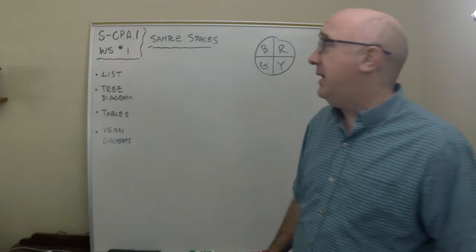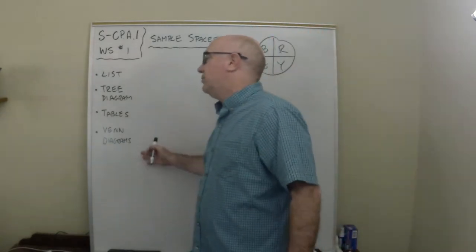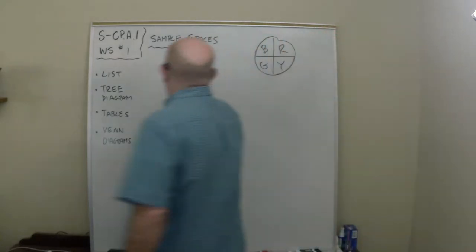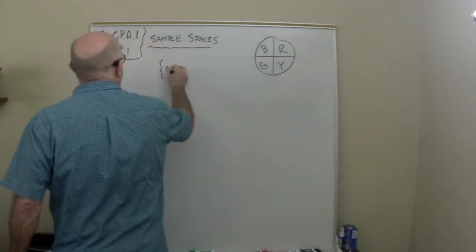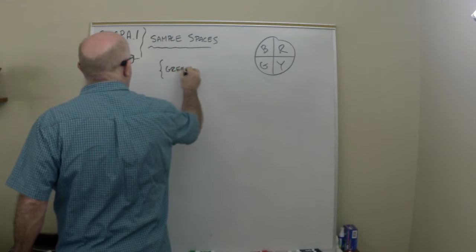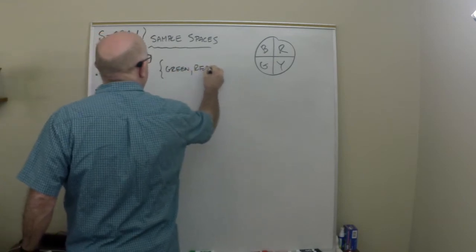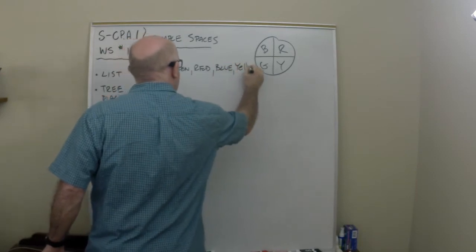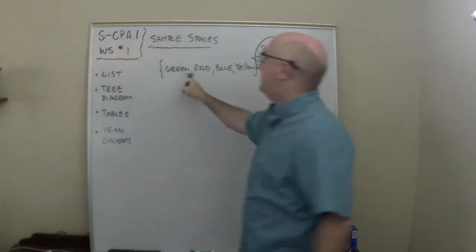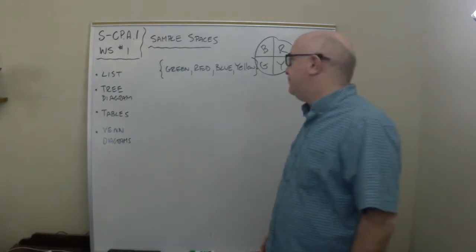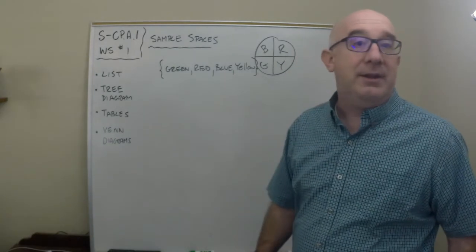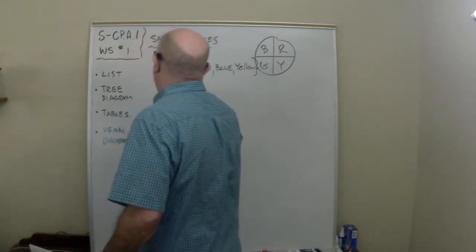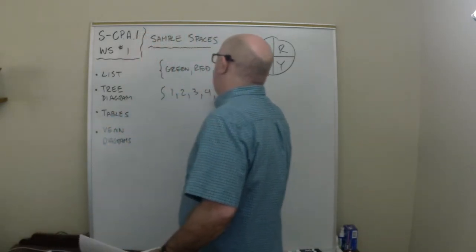Now you have many different ways to organize or list or put all that sample space together. One way is in a list so we can do red, that happens to be green, and green and blue and yellow. This is a listing method here. You see how they're listed. And so if we were doing the numbers one through five, if we're picking the number one through five, this would be our list.